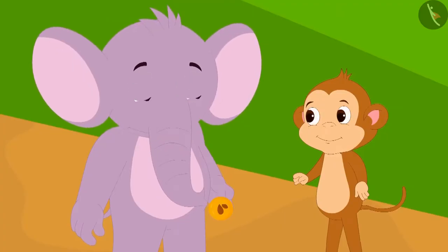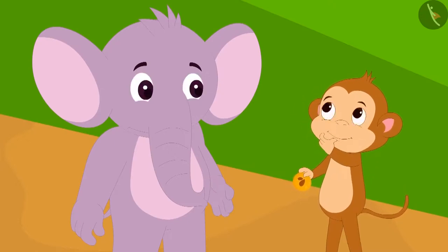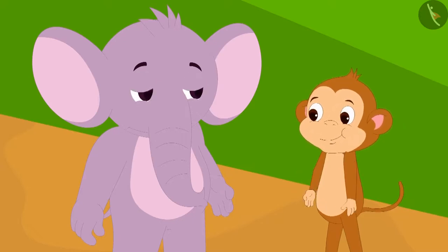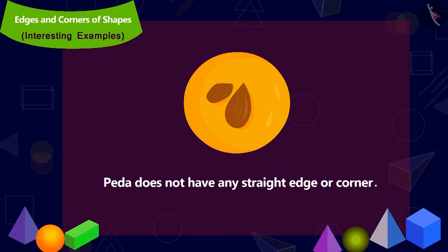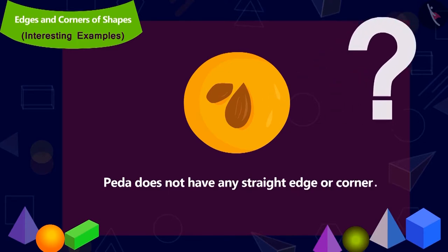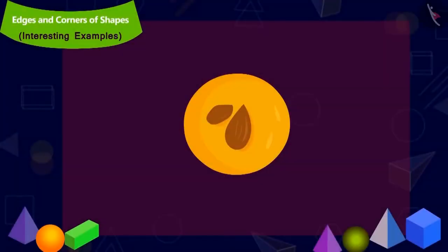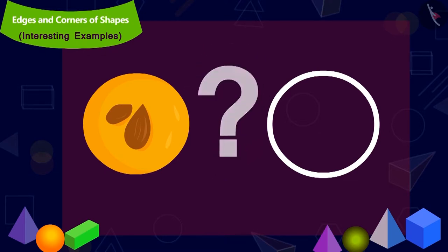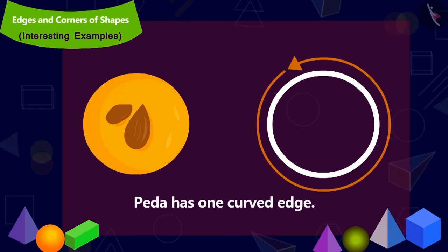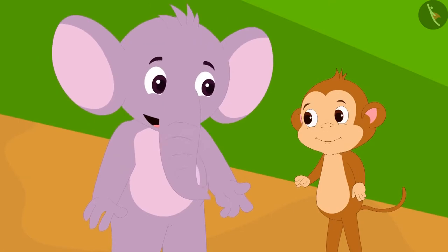Now Appu had understood Babban's trick. This time he gave Babban a peda. Babban was confident that this time too he will answer correctly, so he quickly ate the peda. Then Babban started thinking and answered that a peda has no corners and no edges. Children, is Babban's answer correct? This is how a peda looks. Can you recognize its curved edge? This is the curved edge of a peda — a curved edge. And a corner? Yes, a peda does not have a corner. Appu explained the correct answer to Babban and took money for the peda from him.